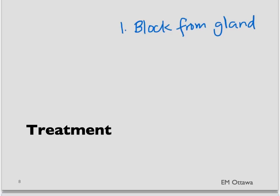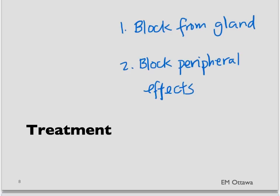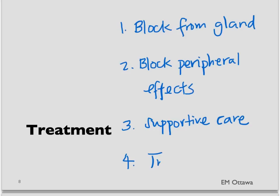Let's talk about the different kinds of treatment. Treatment is divided into four components. First, we block the hormone from the thyroid gland. Second, we block the peripheral effects of the hormone. Third, we give supportive care to the patient, ensuring the ABCs are addressed. And fourth, we look for the trigger and treat it.